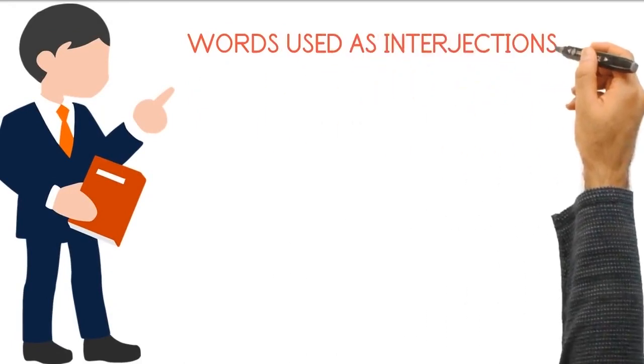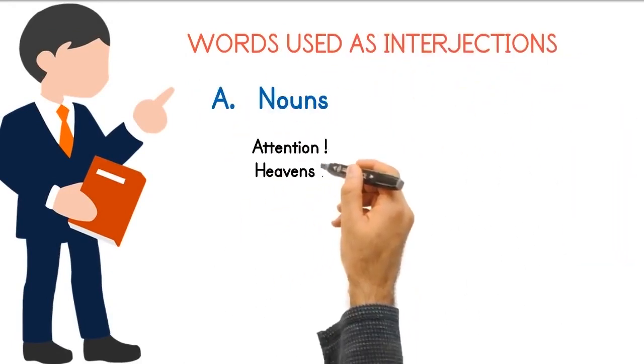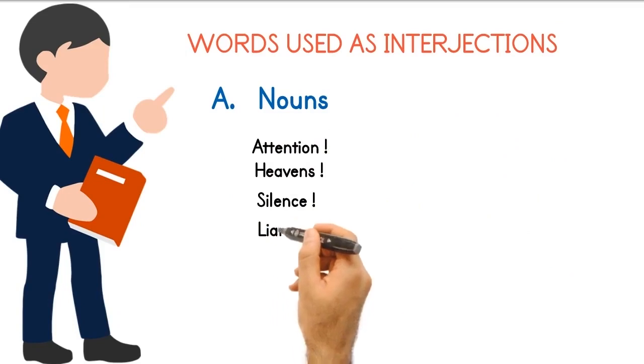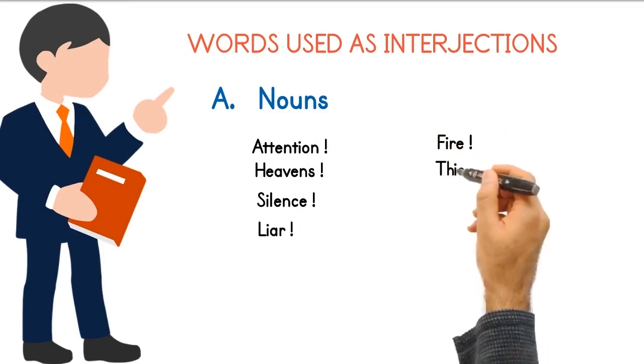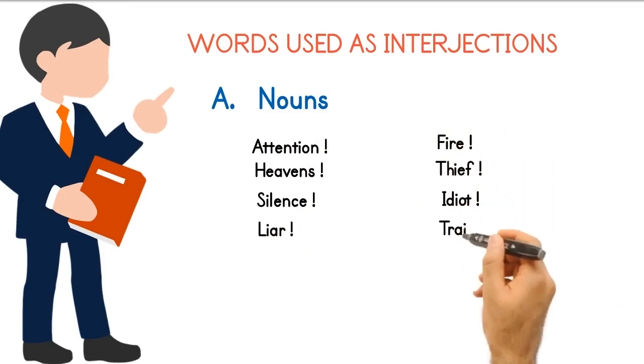Words used as interjections. A. Nouns: Attention, Heavens, Silence, Liar, Fire, Thief, Idiot, Traitor.